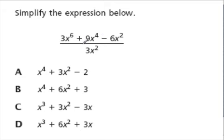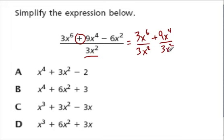It looks even nastier, this problem, but the same principle applies. We have 3x to the sixth over our denominator, over 3x squared, plus 9x to the fourth over 3x squared, minus 6x squared over 3x squared. So that denominator is over each part in the numerator. So now 3 divided by 3 is 1, so we don't even need to think about that.